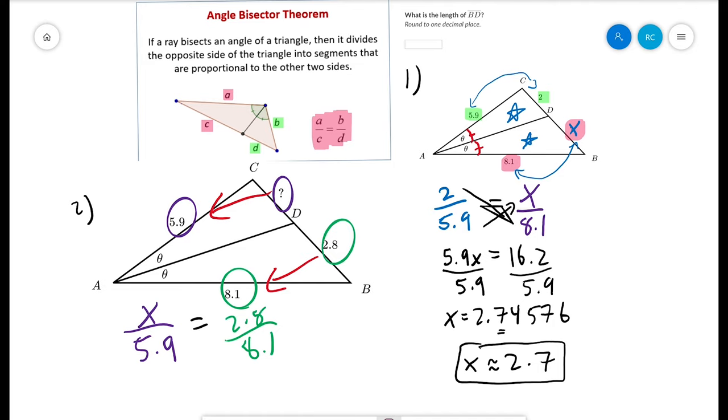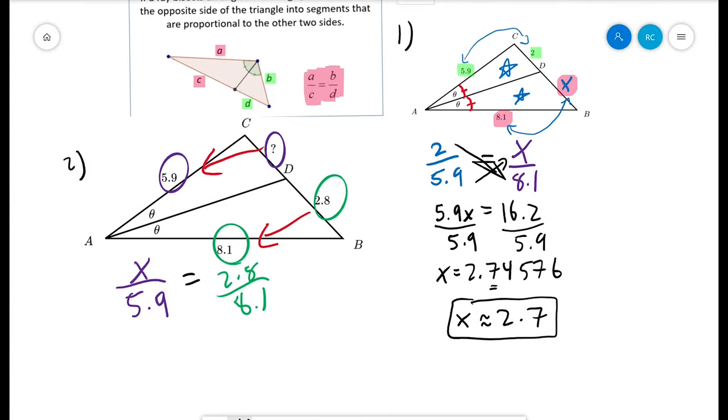Now we're back to cross-multiplying. 8.1x equals 5.9 times 2.8. Let's see, 5.9 times 2.8 is 16.52. Divide both sides by 8.1. We're going to get a little bit more than 2. We get 2.039.